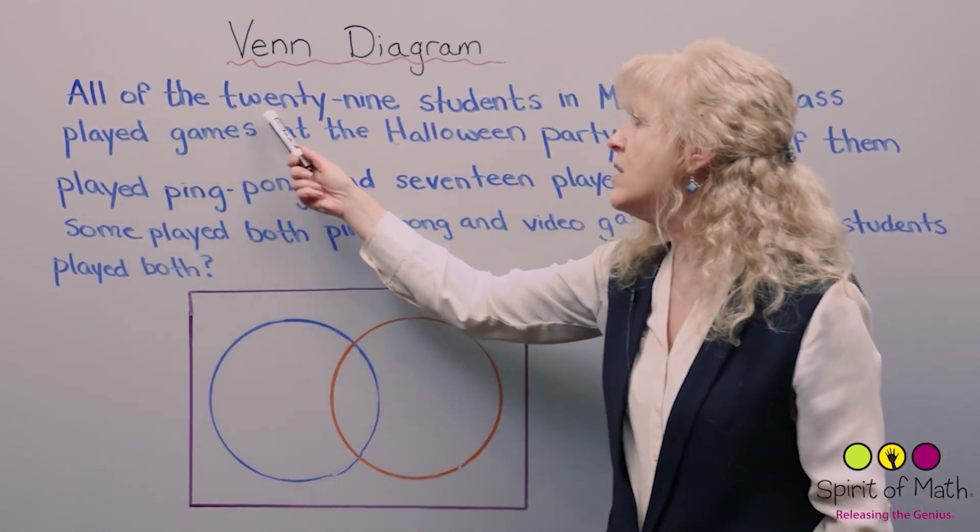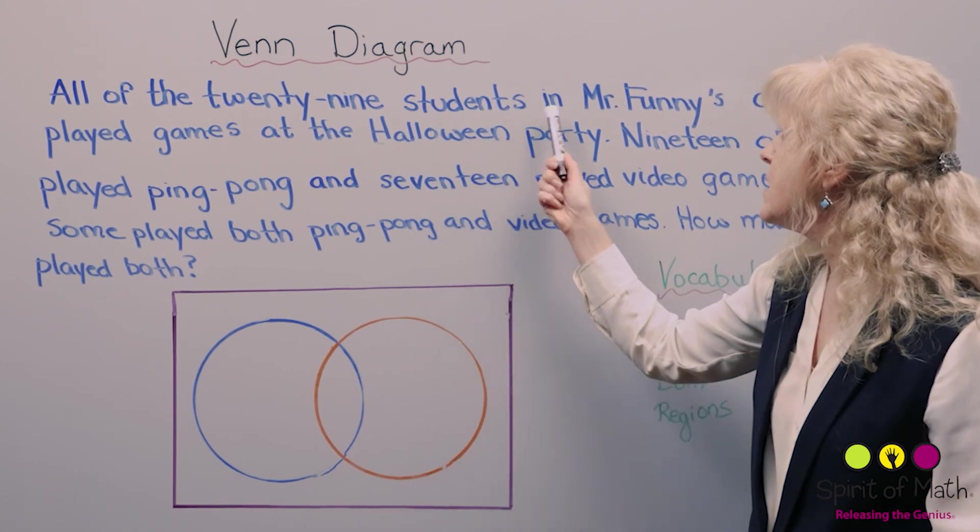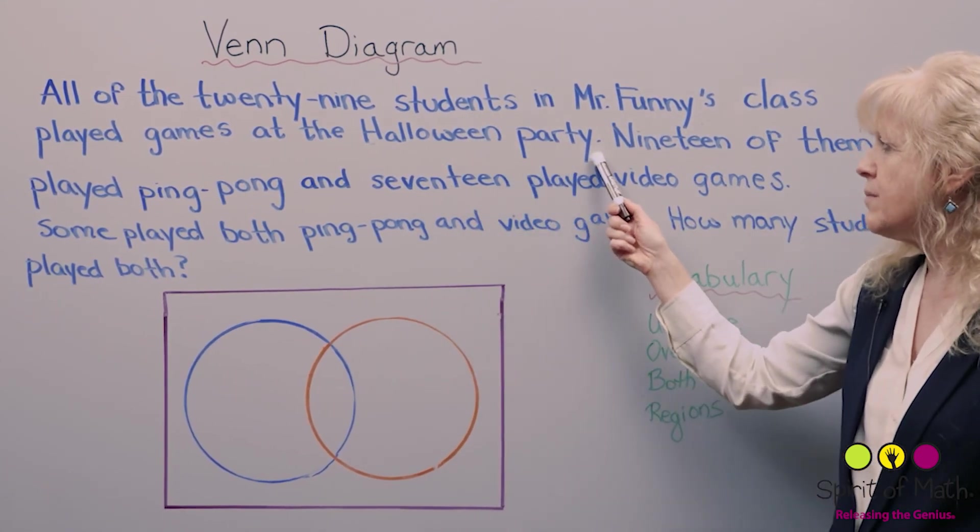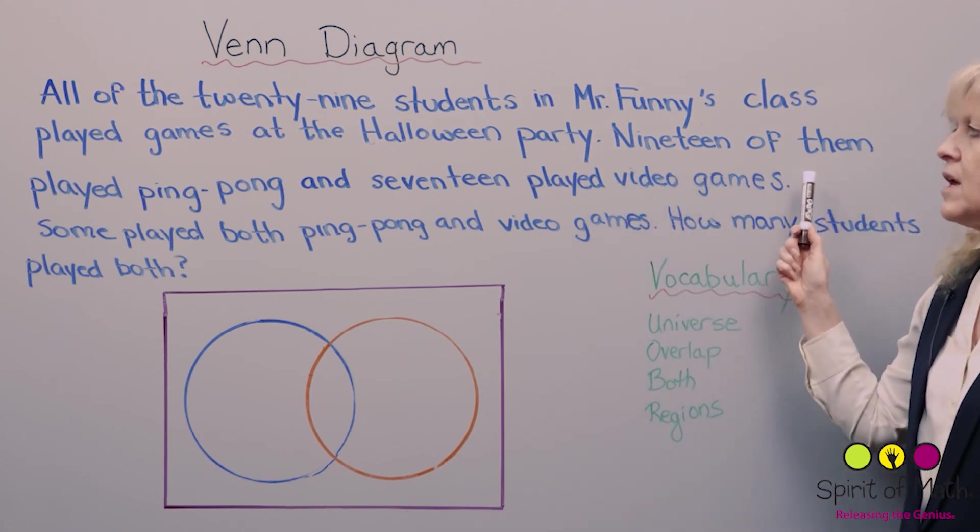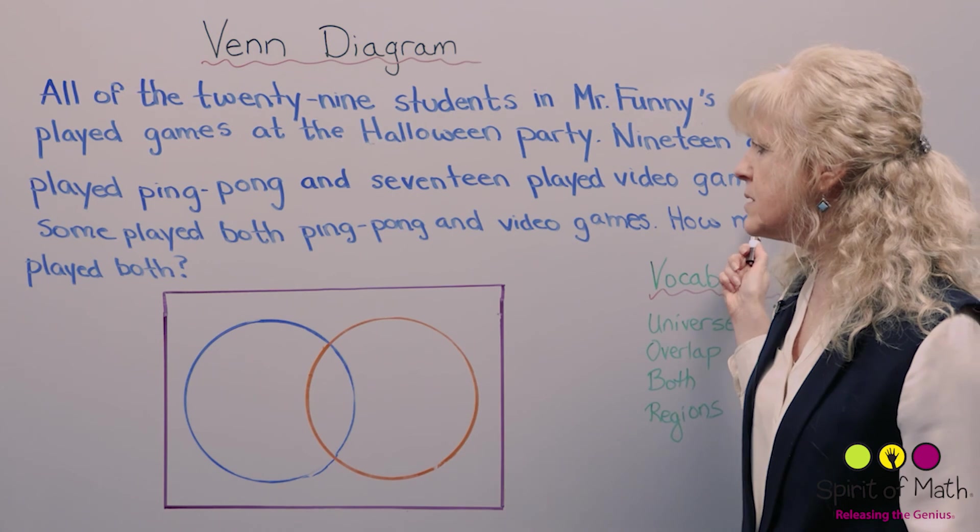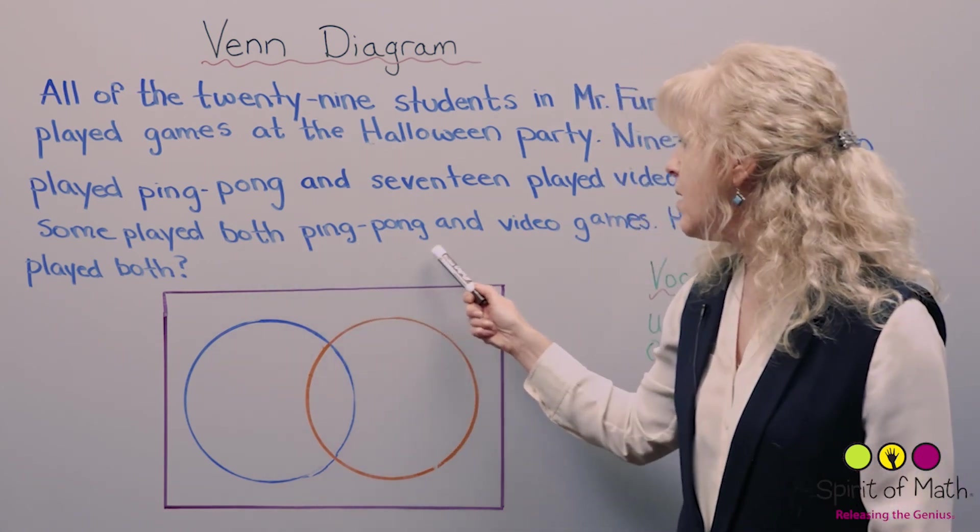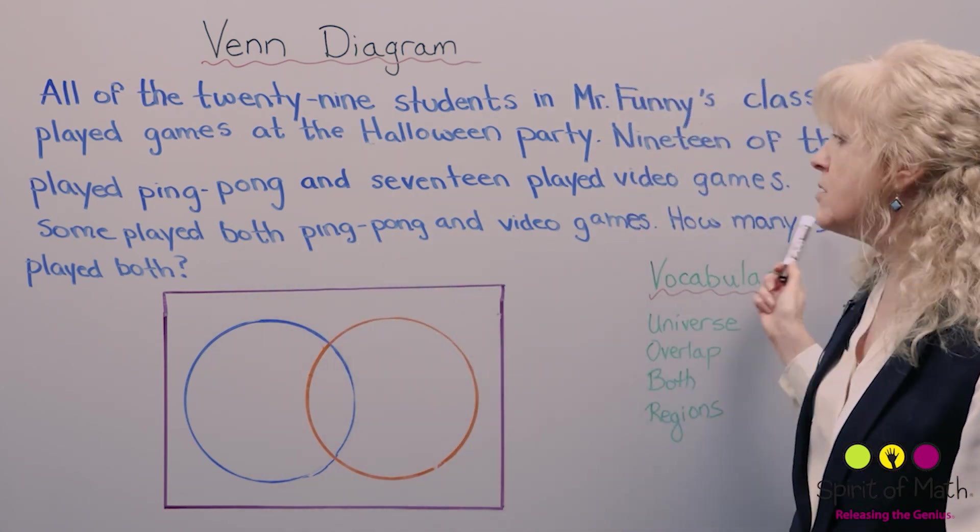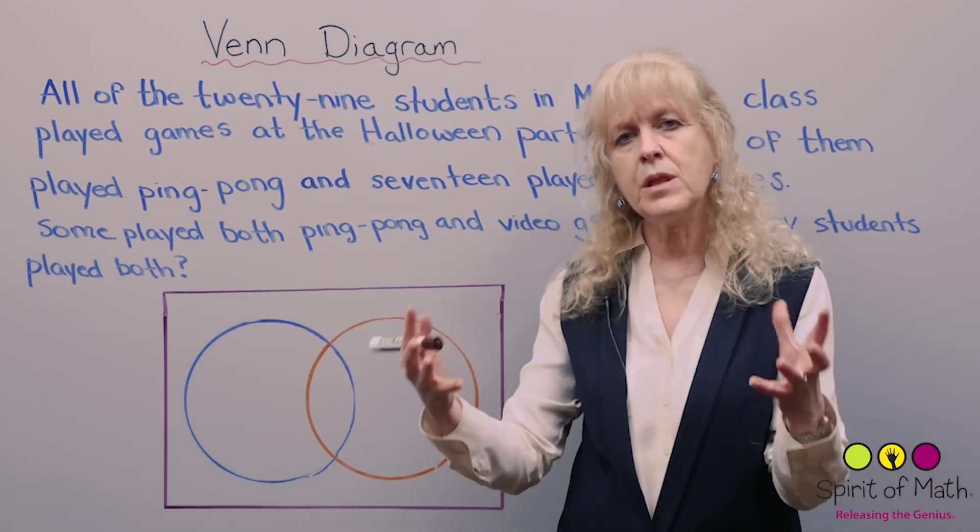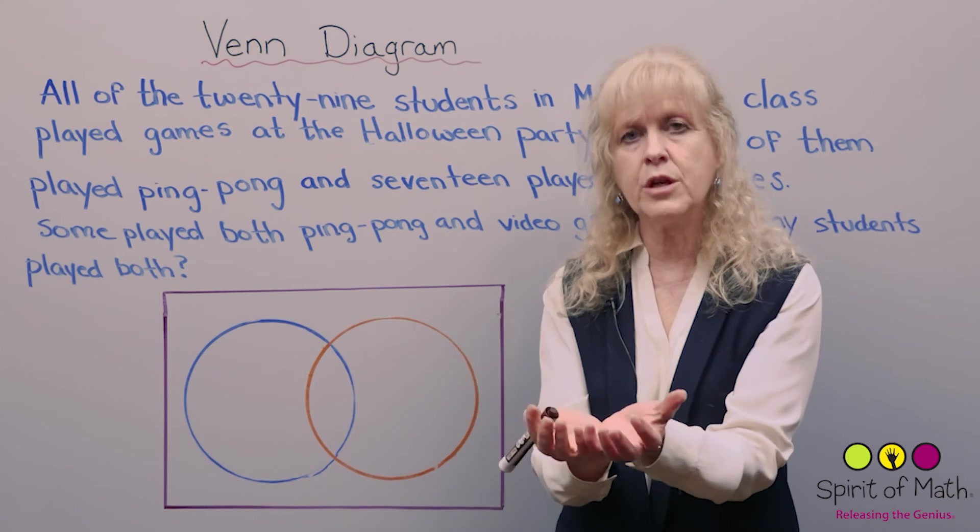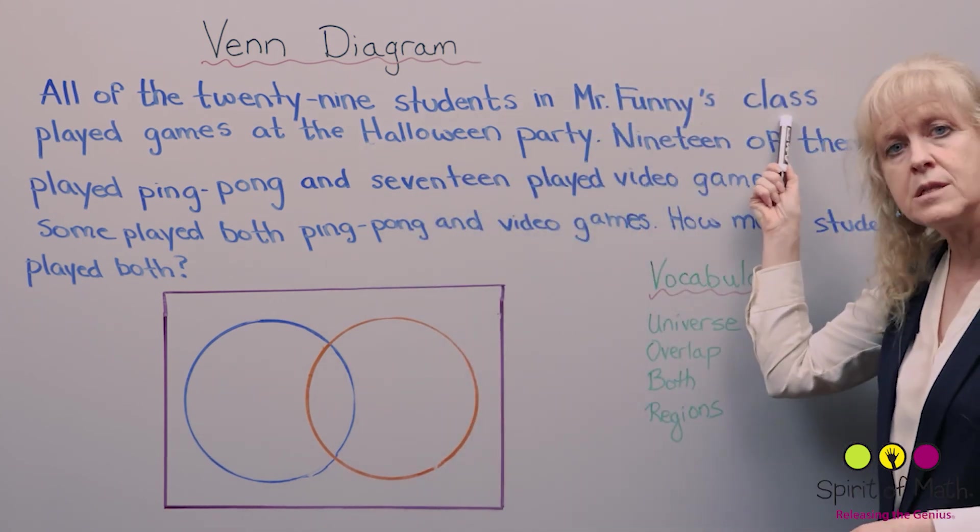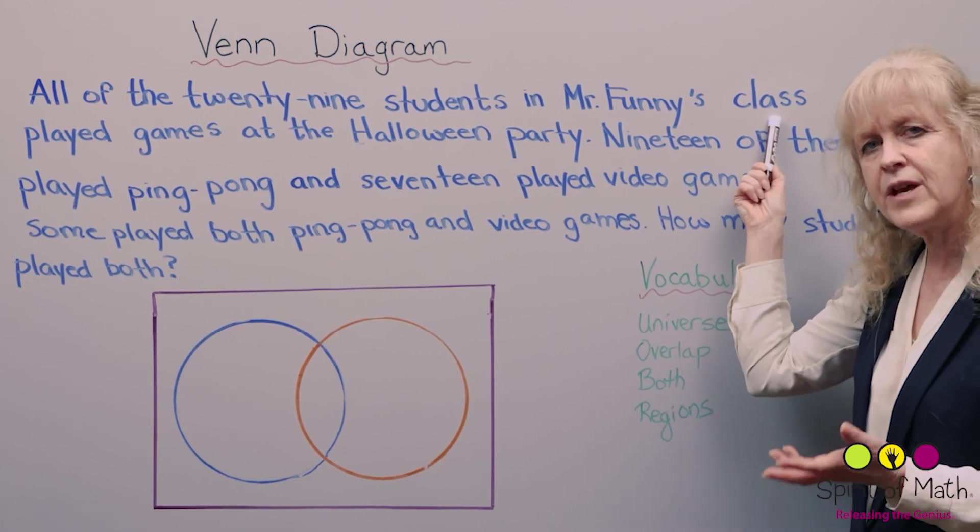This question says, all of the 29 students in Mr. Funny's class played games at the Halloween party. 19 of them played ping pong and 17 played video games. Some played both ping pong and video games. How many students played both? You can see the two groups of students and you can see that they belong to one overarching group. The overarching group is Mr. Funny's class. This is how you recognize a Venn diagram.